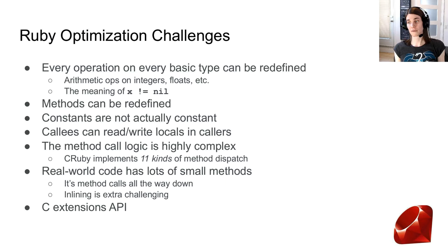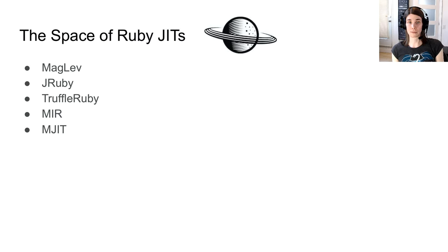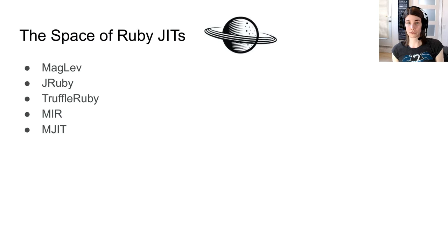Before going further, I should talk about the space of Ruby JITs. Ruby is interesting because there are multiple projects to implement Ruby JITs, some dead, some still active. In this slide I'm naming a few: Maglev, JRuby, TruffleRuby, the Mir JIT, and MJIT.